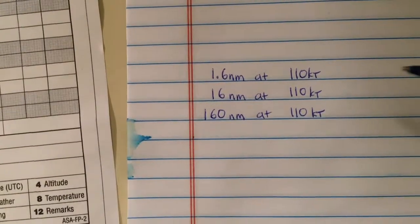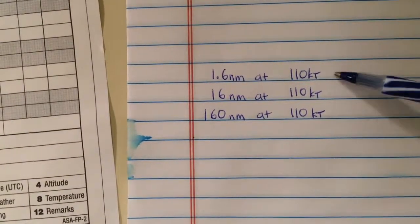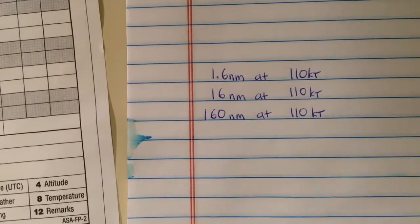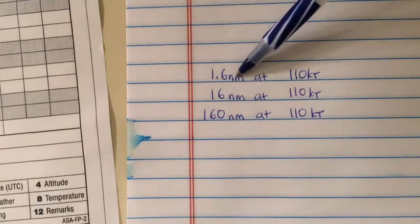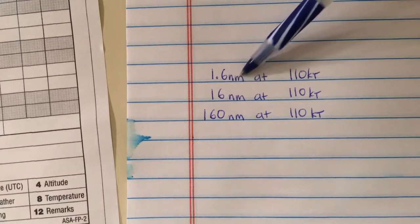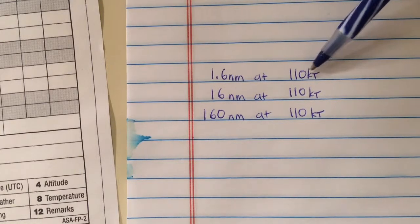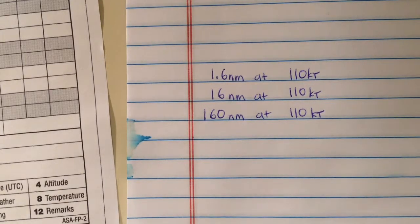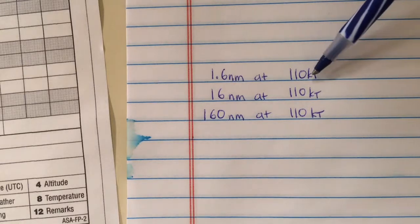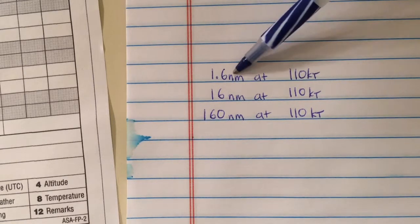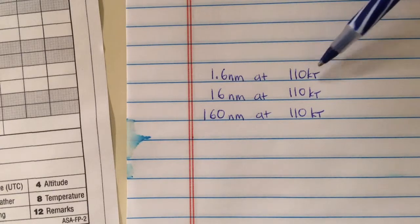A couple of words of warning about the units that can be used when computing values using the E6B. First, make sure your units are matching up. Nautical miles are associated with knots. Knots simply means nautical miles per hour. If you're using miles per hour, you need to use statute miles, and the calculations will work out the same.